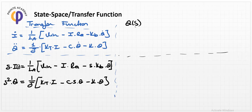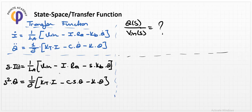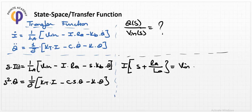To obtain θ(s)/V_in(s), we need to eliminate the current term. Rearranging the first equation, we collect the I terms: (s + R_A/L_A)·I equals V_in·(1/L_A) minus θ·(s·K_B/L_A). So the current I can be expressed in terms of V_in and θ.